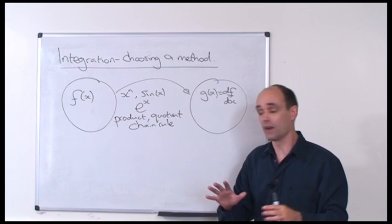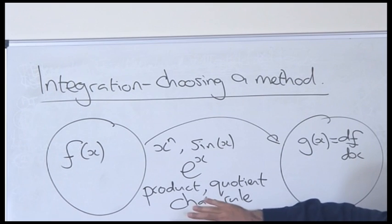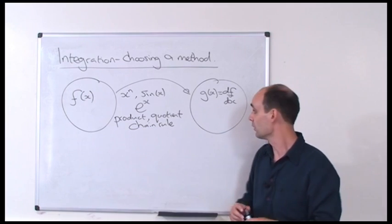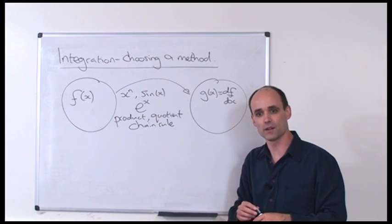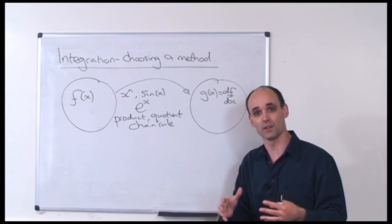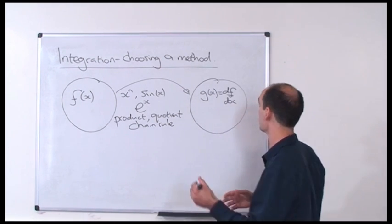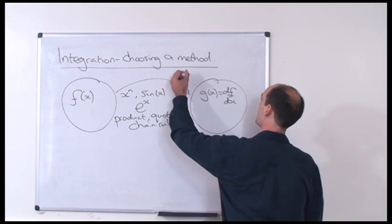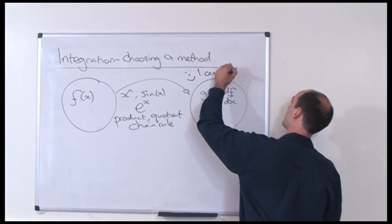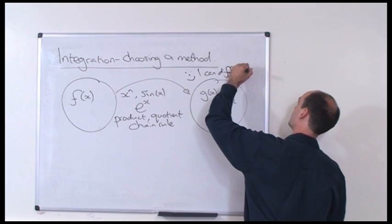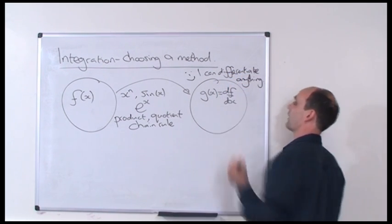After a little while, having got used to differentiating these simple functions and all these different rules — product rule, quotient rule, and so on — you kind of get to a stage where you think to yourself, actually, I can differentiate pretty much anything somebody throws at me. It's a very simple mechanical process.